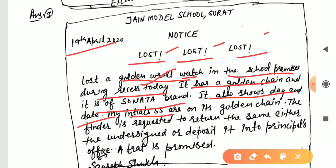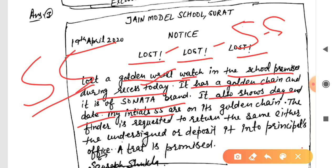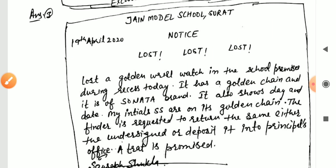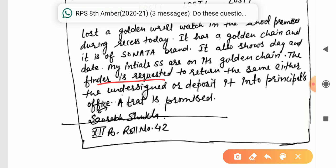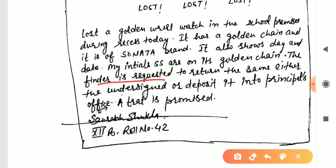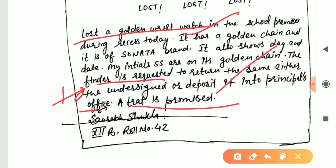The name was Sourav Shukla, so the initials 'S.S.' are also written on the golden chain strip of the watch. The finder is requested to return it either to the undersigned or deposit it at the principal's office. A treat is promised. Write the first-hand information first — where it was lost — then the physical description, then where the finder should deposit it, then the student's name, class, and roll number. No need for a designation since this is a student notice.